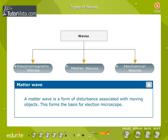A matter wave is a form of disturbance associated with moving objects. This forms the basis for quantum mechanics.